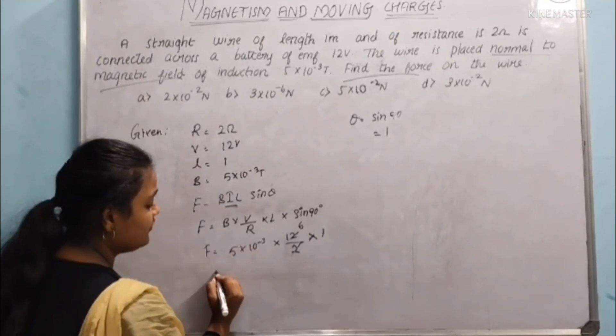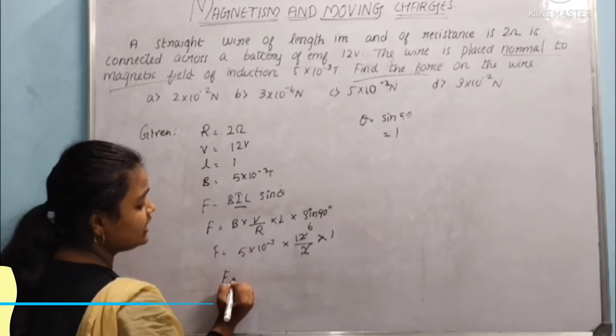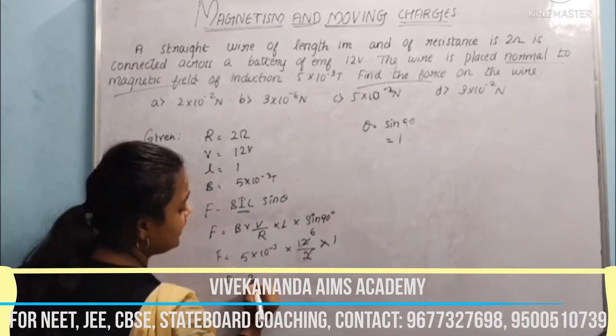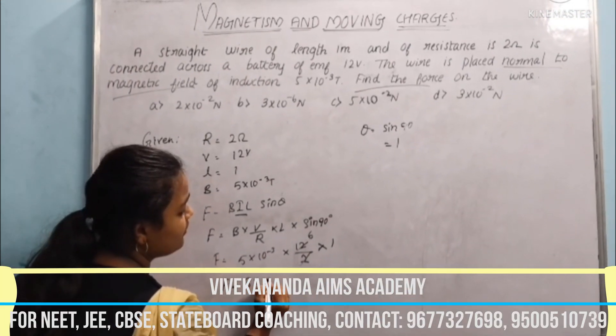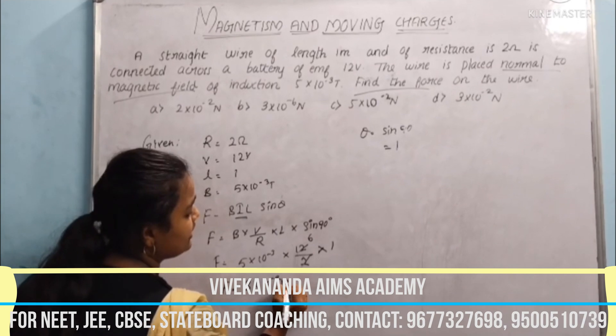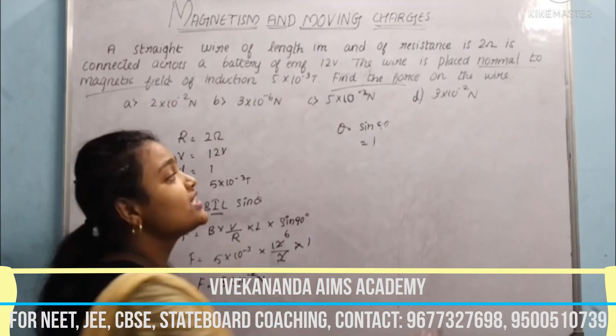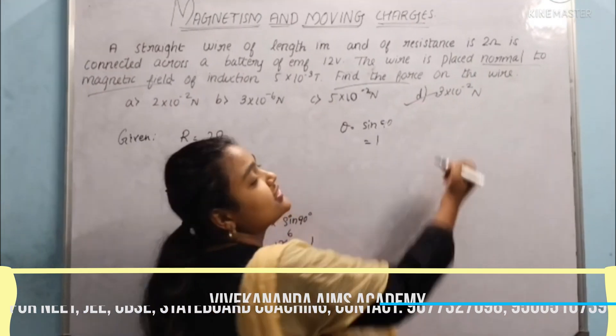Now multiplying all the values, we get the final answer: 3 into 10 power minus 2 N. The option D is correct.